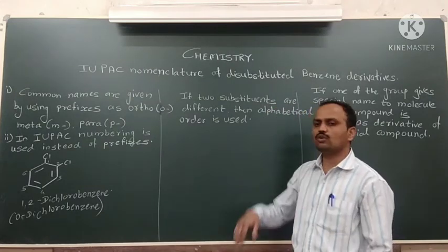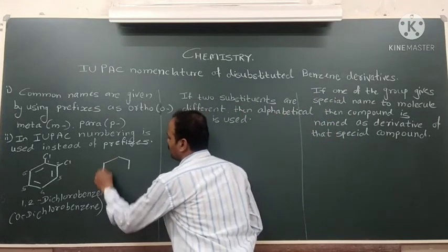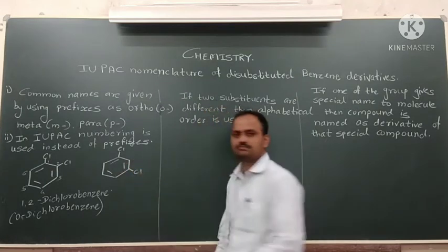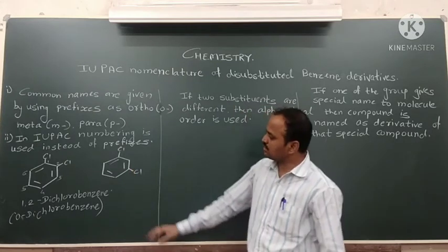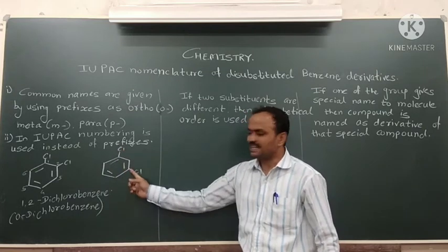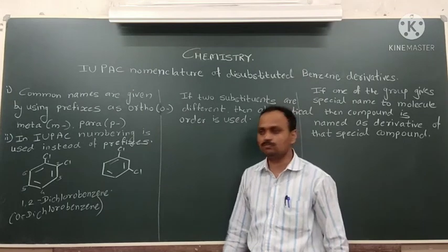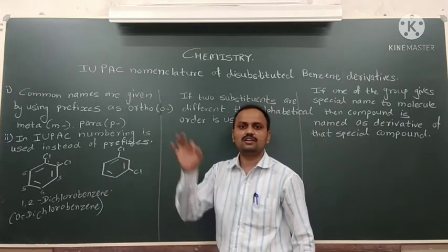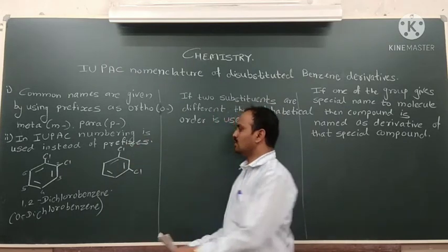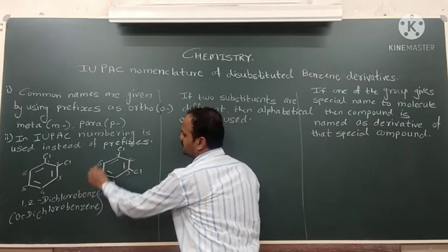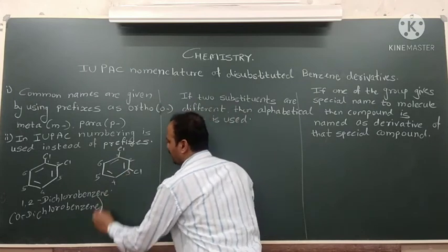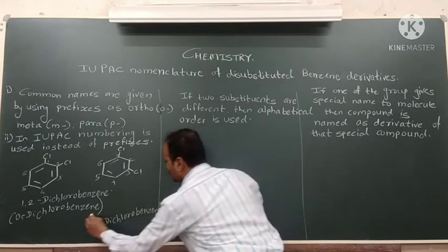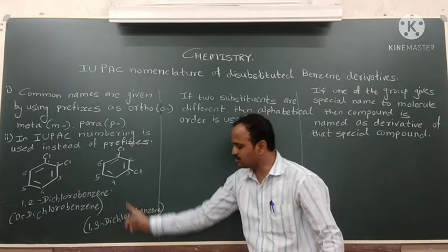Similarly, we can have another example of the same type. Here we take a benzene ring with chlorines attached on the first and third carbons. In common nomenclature, this is the meta position, so the common name is meta-dichlorobenzene. In IUPAC nomenclature, numbering gives positions one and three, so the name is 1,3-dichlorobenzene.